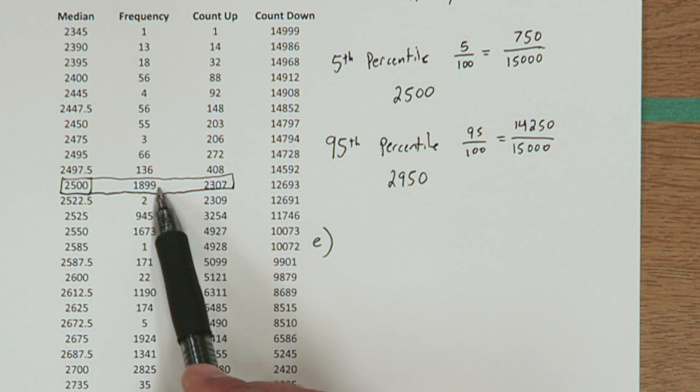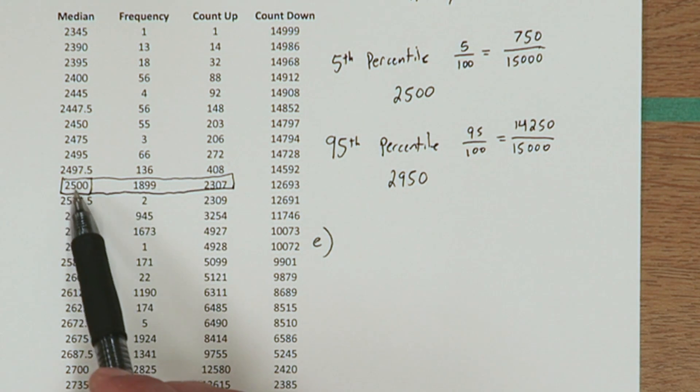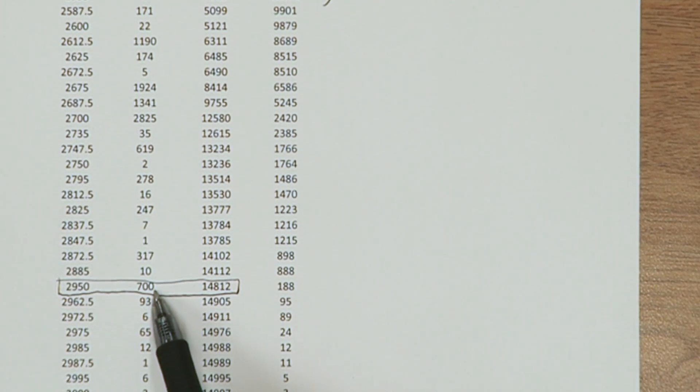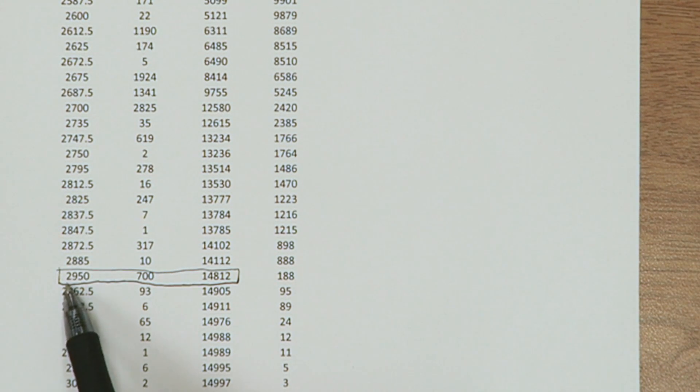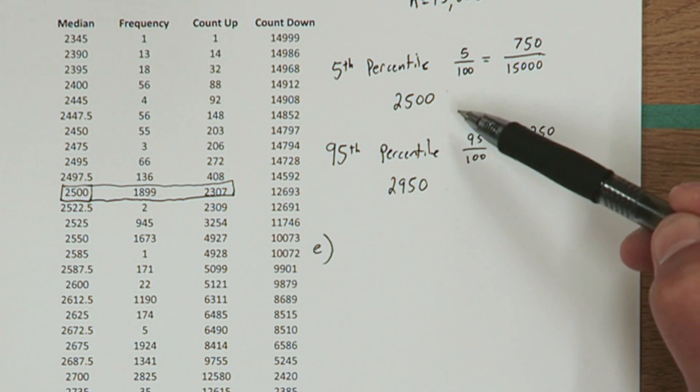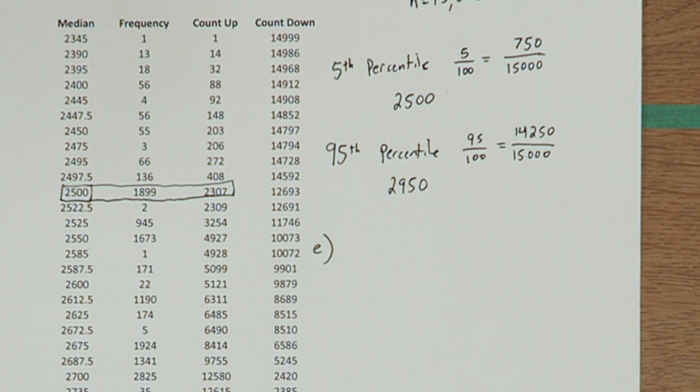Notice there was actually almost 1,900 sample medians that resulted in 2,500. And there was 700 sample medians that resulted in 2,950. So from the 5th to 95th percentile, these two values don't actually cut off the middle 90% of the data. So let's figure out what percent of the data they actually do cut off.